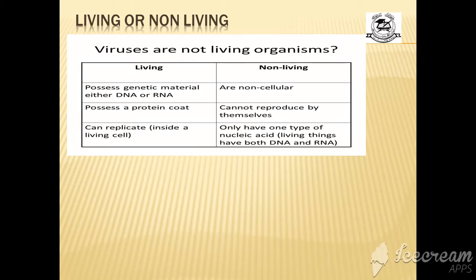They can replicate to reproduce, making copies. But why are they non-living? Because they are non-cellular. Every living thing is made up of cells, so this is non-cellular. They cannot reproduce by themselves. If they are outside the host, they cannot reproduce. They only have one type of nucleic acid, whereas living things have both types of nucleic acids, DNA and RNA.